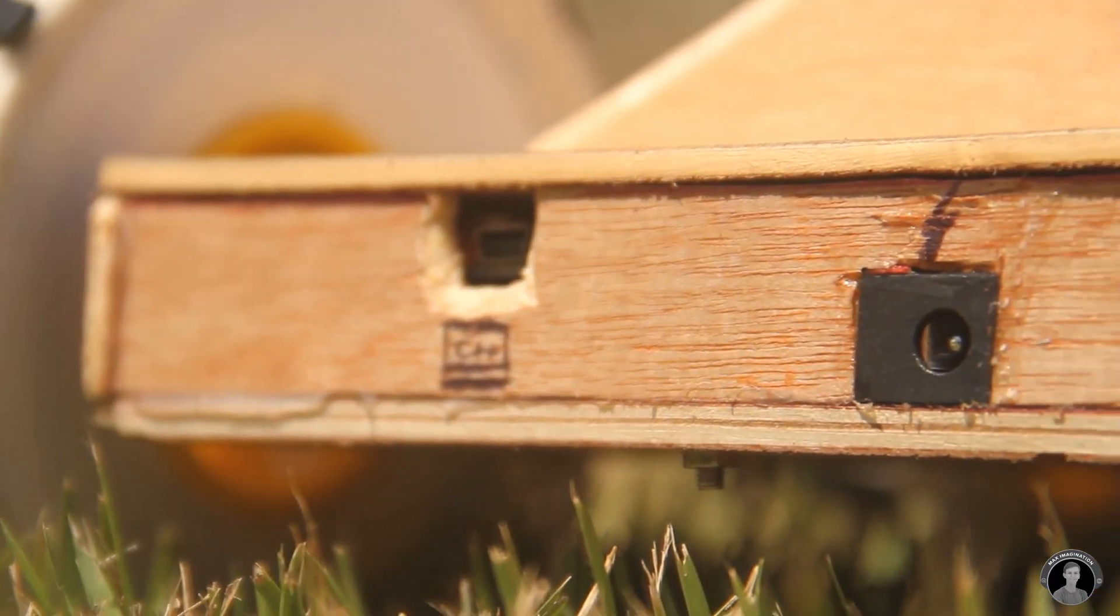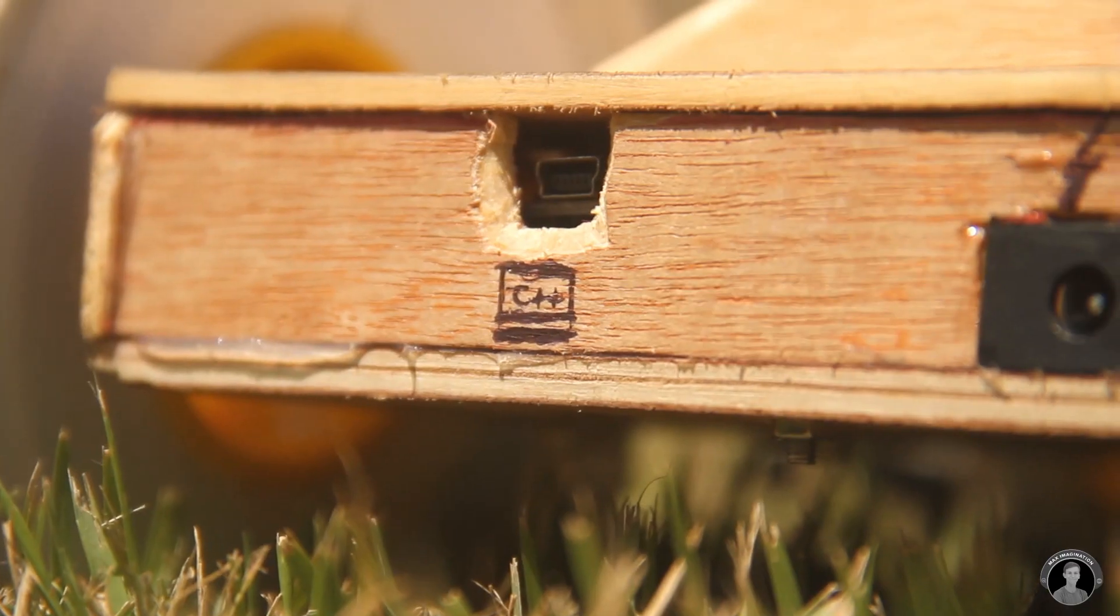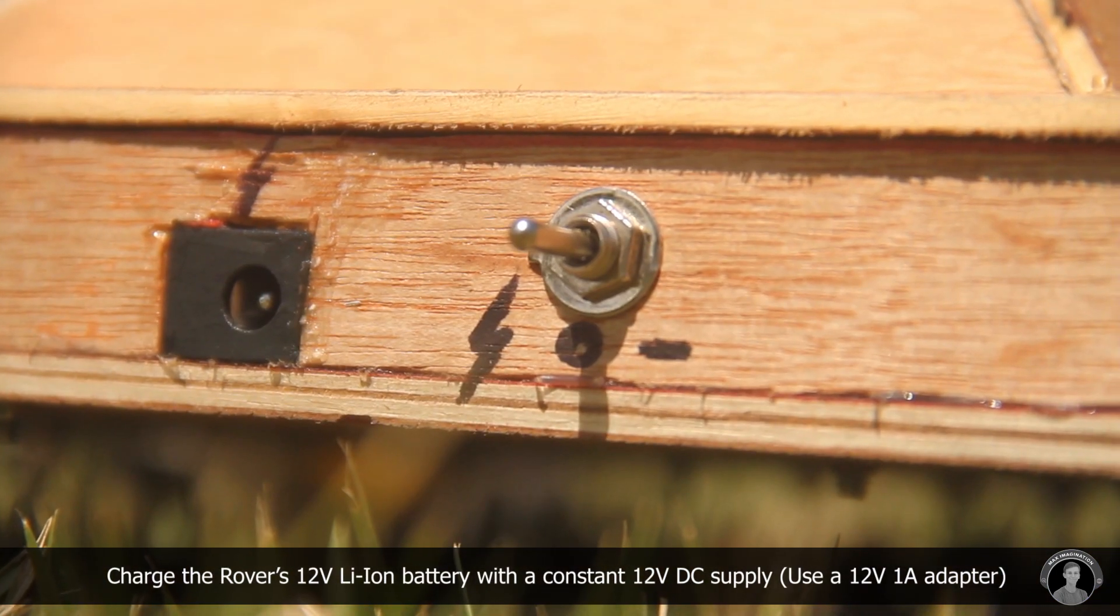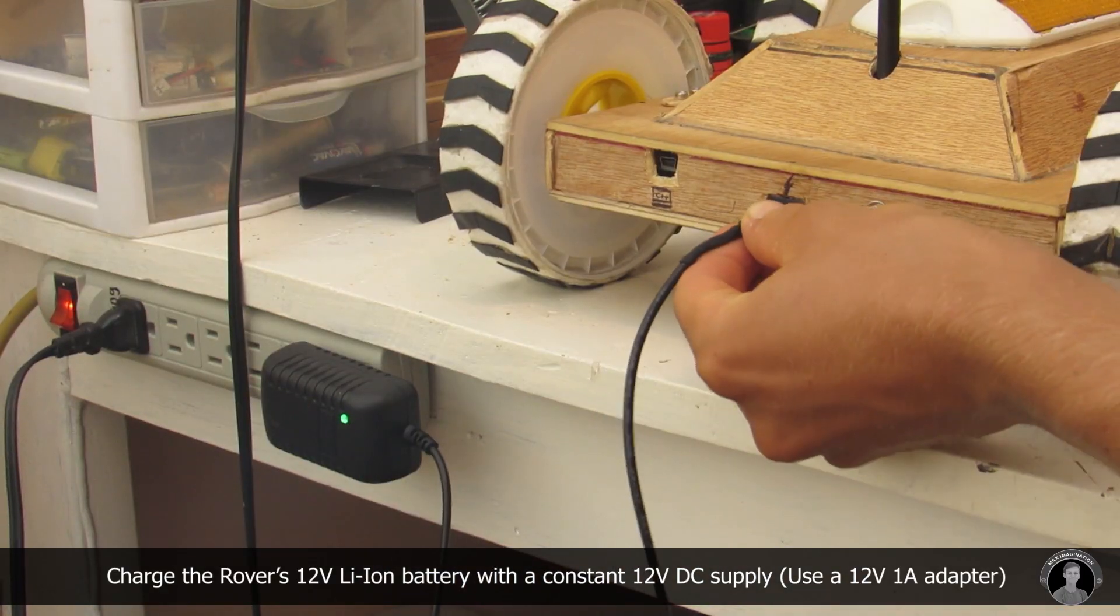So to clarify the features and ports on the back of the rover, you got the programming port, charging port, and the switch which can either be off, on, or on charging mode.